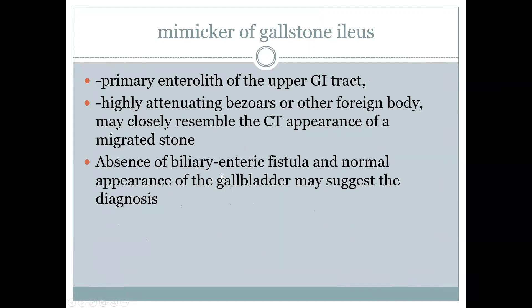There are a few mimickers of gallstone ileus. One is the enterolith, and the other is bezoars or any other foreign body, which may closely resemble the CT appearance of the migrated stone. However, if you see something like that, you have to look for any biliary-enteric fistula and the appearance of the gallbladder. If there is no biliary-enteric fistula and the gallbladder appears normal, it is likely one of these other pathologies.